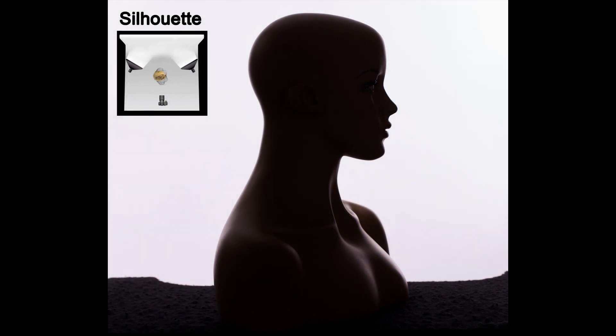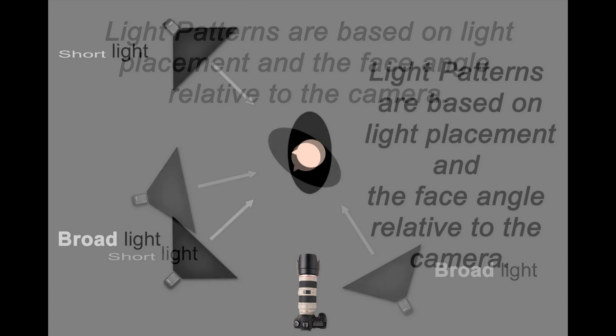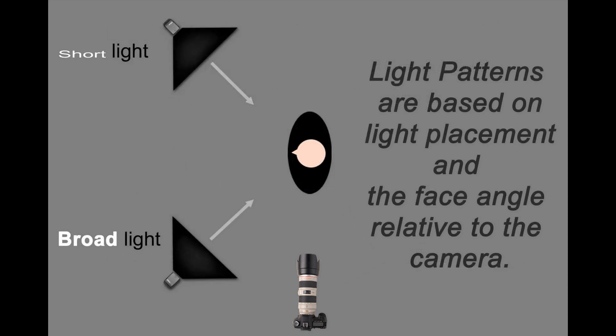A silhouette means showing the outline of the person with the background being very light and the subject being very dark. Whether we get there with sunlight, soft light, subtractive lighting, or additive lighting — as with these softboxes — short light and broad light are the two most prevalent patterns we need to know how to achieve.